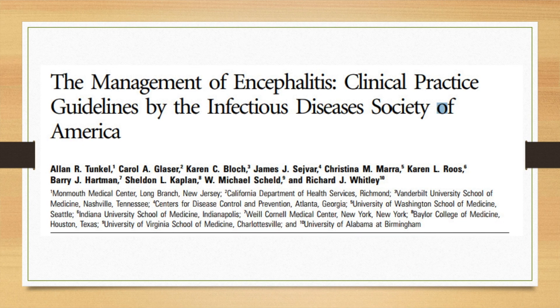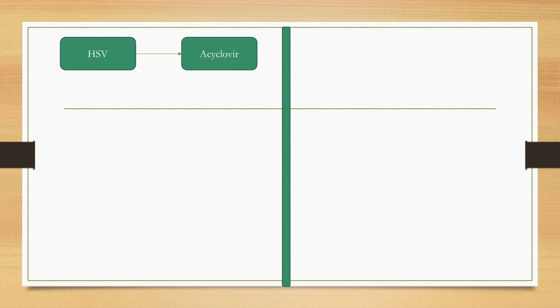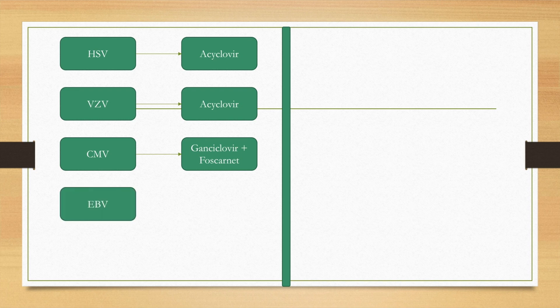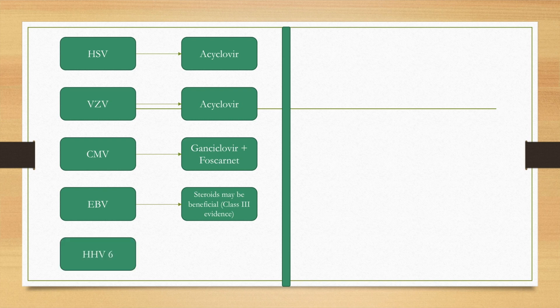Based on the clinical practice guidelines of the Infectious Diseases Society of North America: for herpes simplex virus and varicella zoster, acyclovir is used. For CMV, ganciclovir and Foscarnet are used. For Epstein-Barr virus, steroids may be beneficial although this is only class 3 evidence. For human herpes 6, ganciclovir and Foscarnet may be used as for CMV.